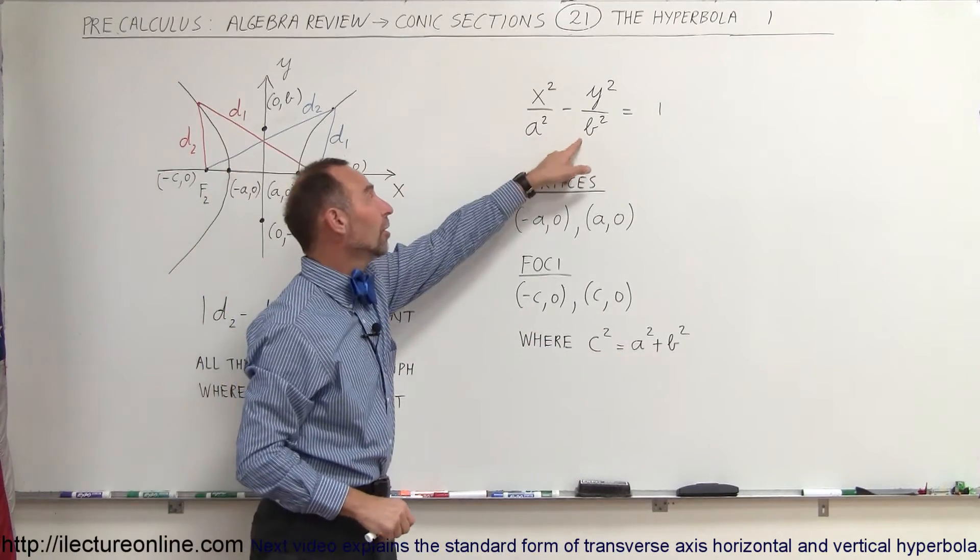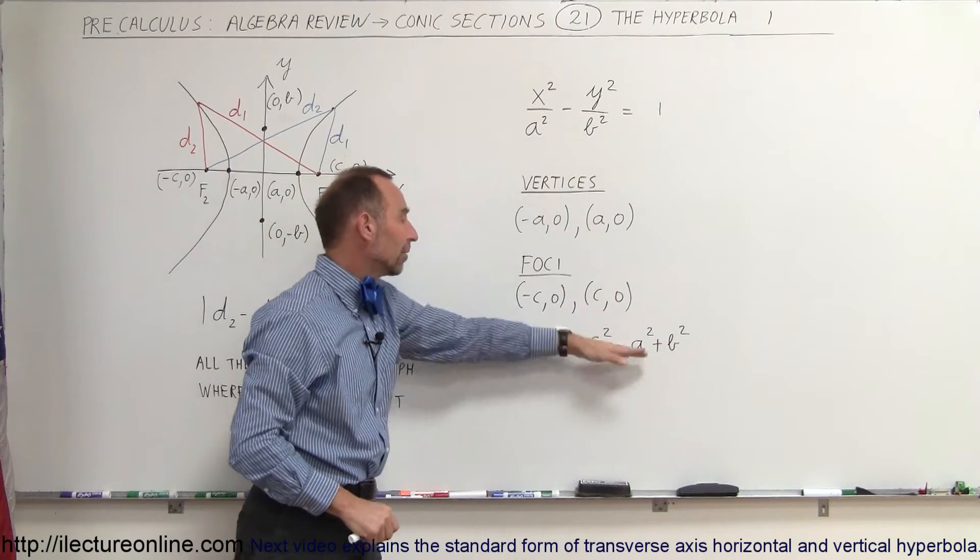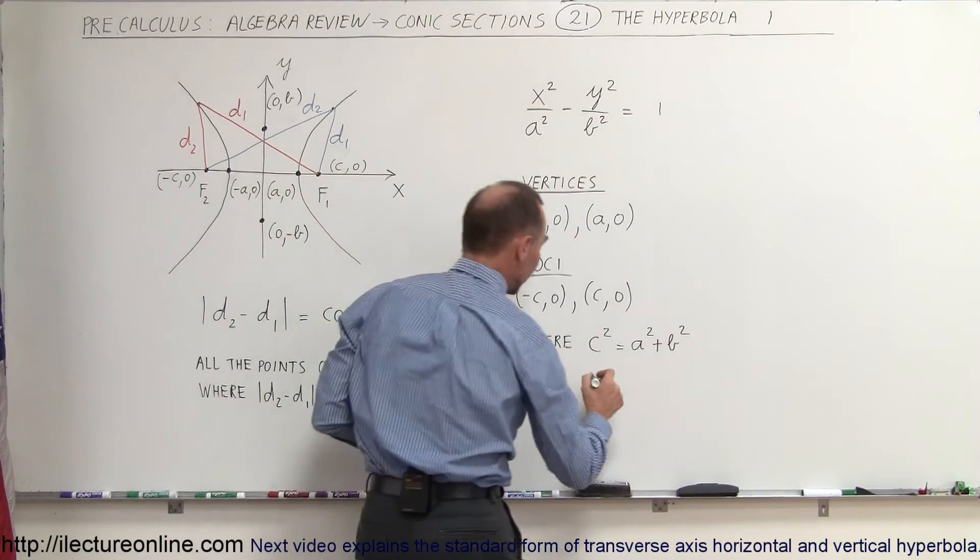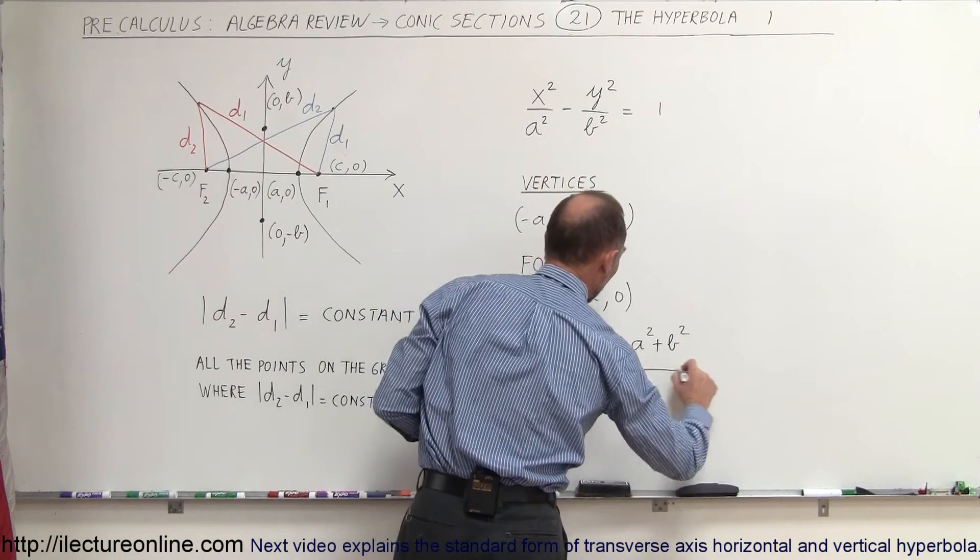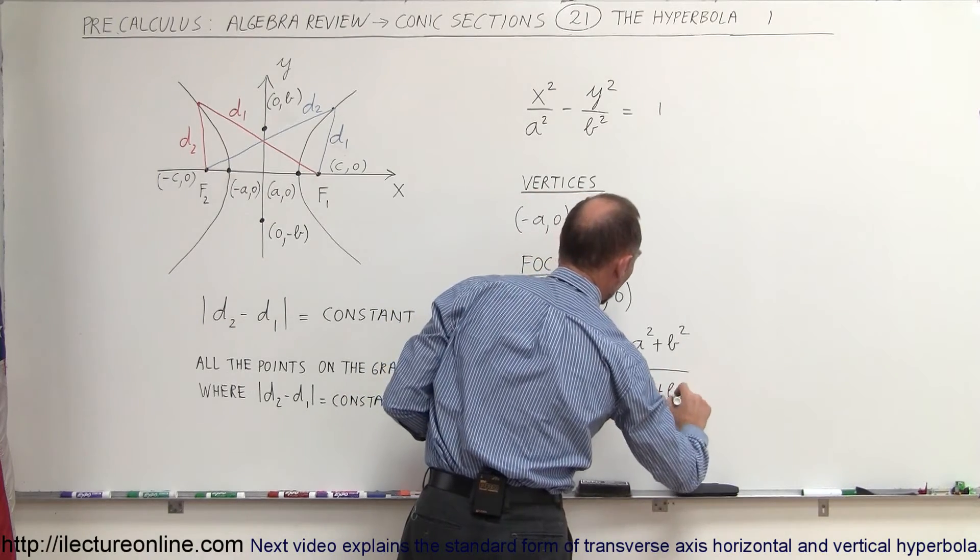So whatever these values are, sum these up together and that then equals c². Or you can then say that c is equal to the square root of a² + b².